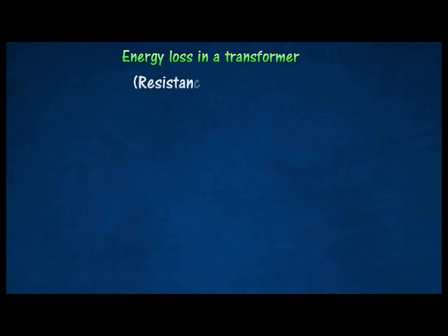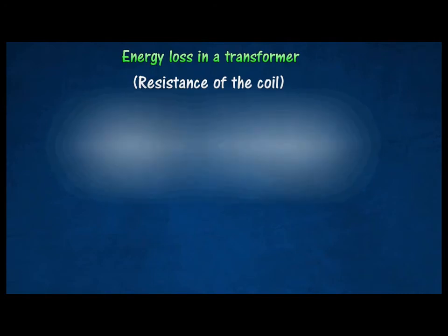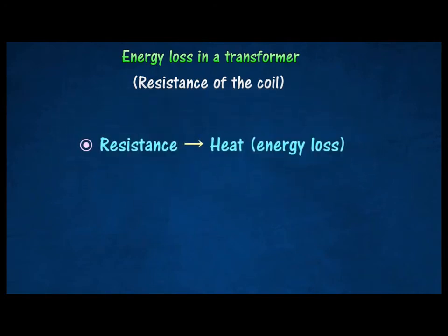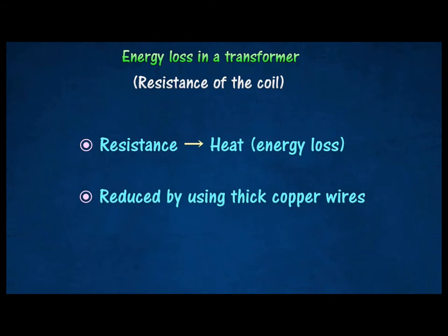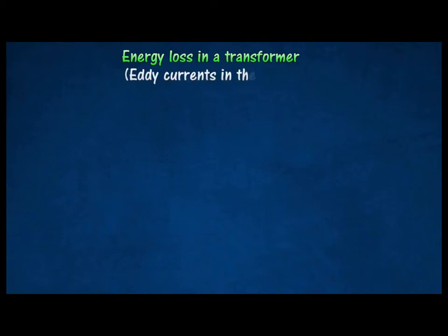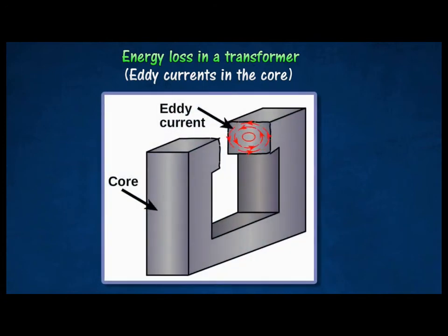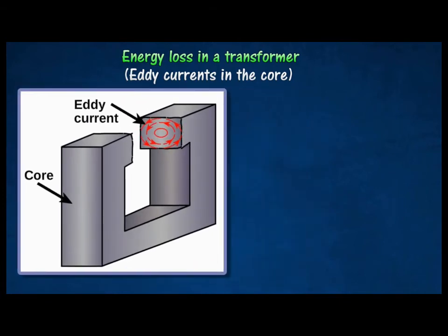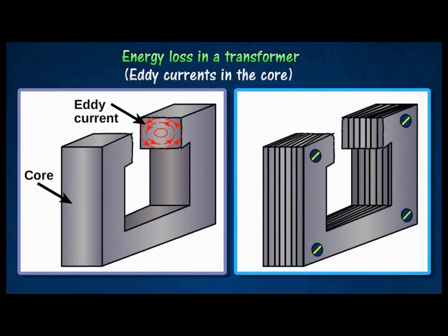Energy can be lost in a transformer due to the resistance of the coils. Heat will be produced when currents flow through the resistance, resulting in energy loss. Energy loss due to coil resistance can be reduced using thick copper wires. The currents induced in the cores are known as eddy currents, as they flow in little circles in the cores. Eddy currents cause heat to be produced in the cores, resulting in energy loss. Energy loss due to eddy currents can be reduced using a laminated core made from thin sheets of soft iron insulated from each other to have high resistance. The high resistance will reduce the flow of eddy currents and thus reduces the energy loss due to eddy currents in the core.